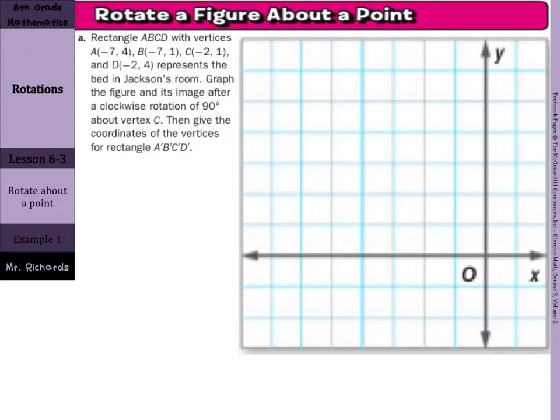Well, first we need to graph the original image. So negative 7, 4 is right here. And that's our A. Negative 7, 1 then would be here. And that's our B. Negative 2, 1 is here. And that's our C. And negative 2, 4 is our D. And we can connect these.